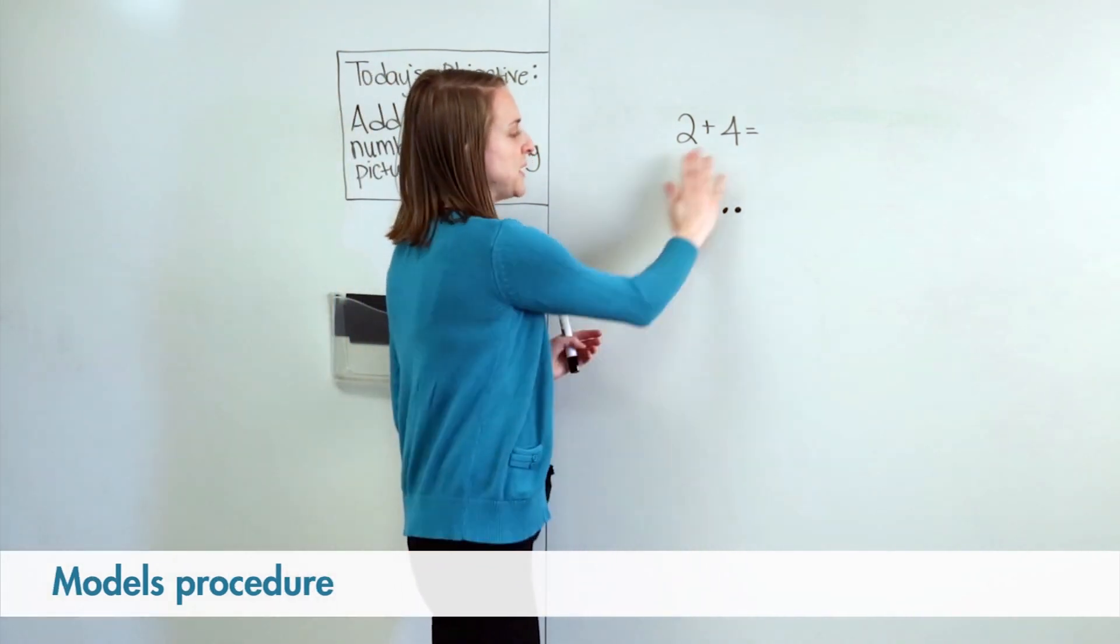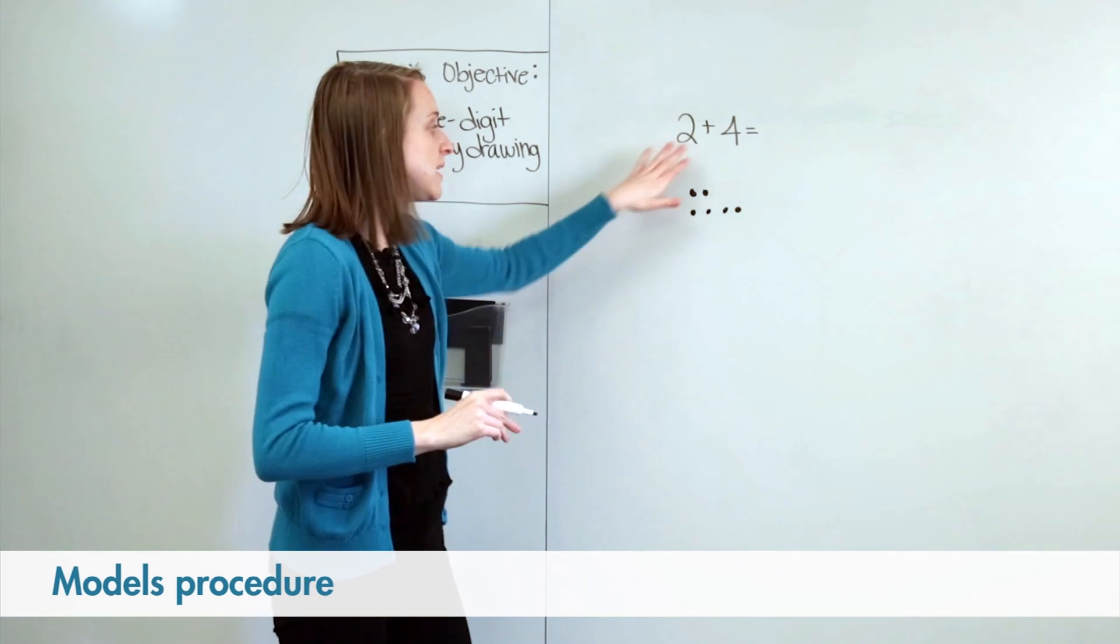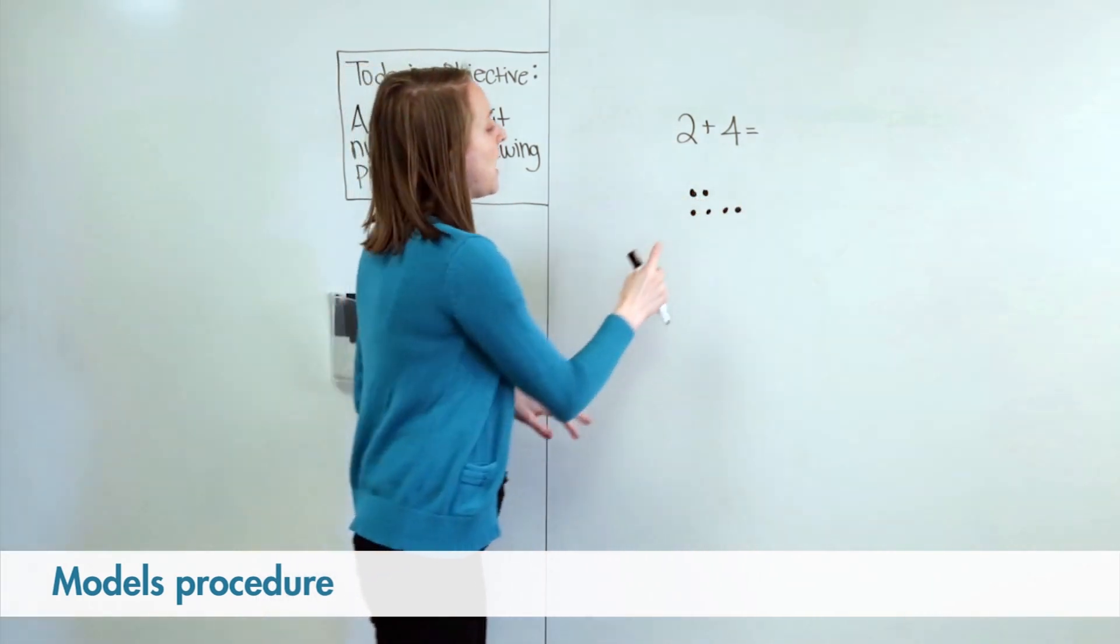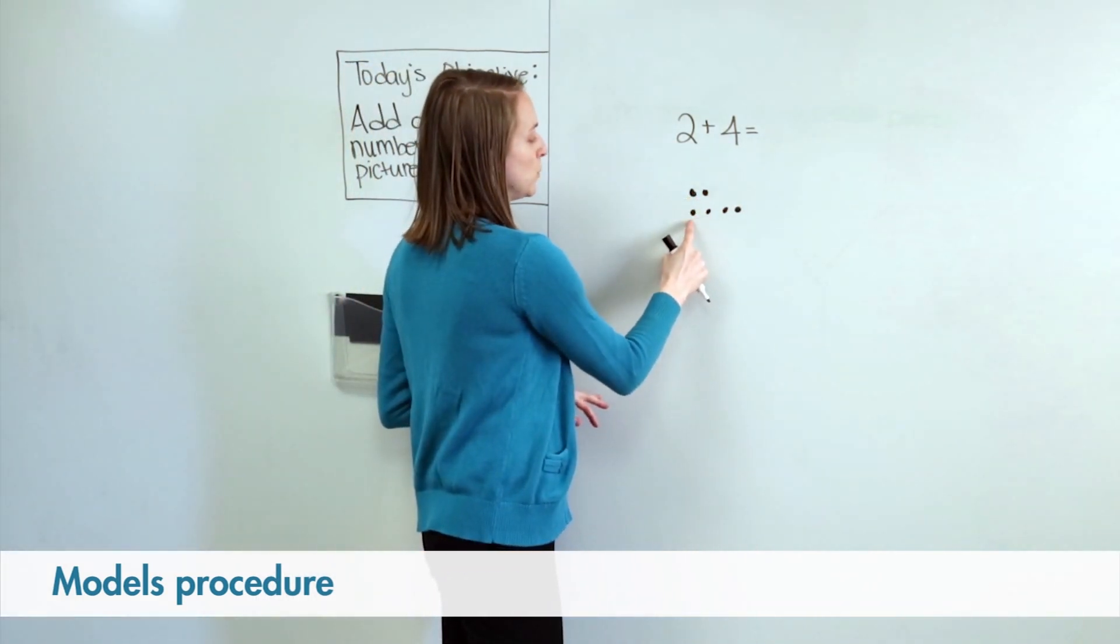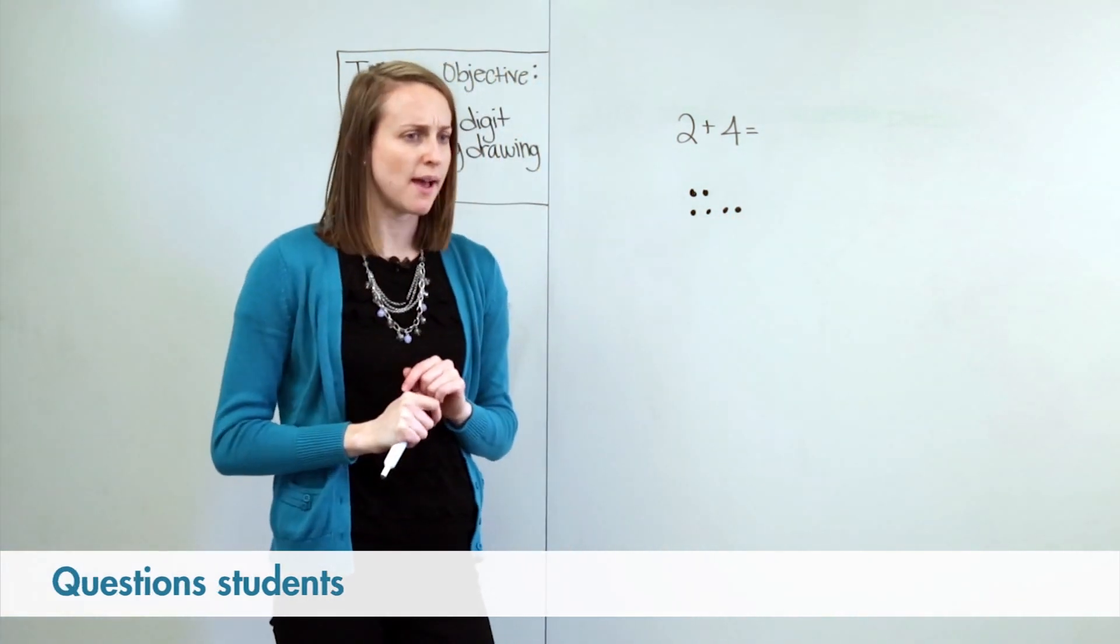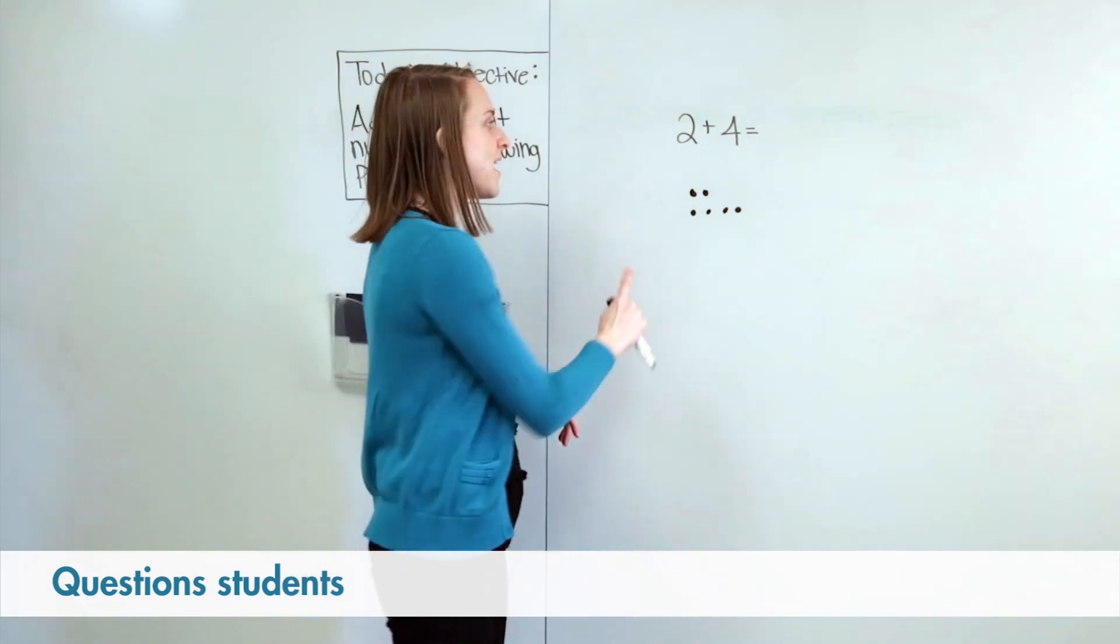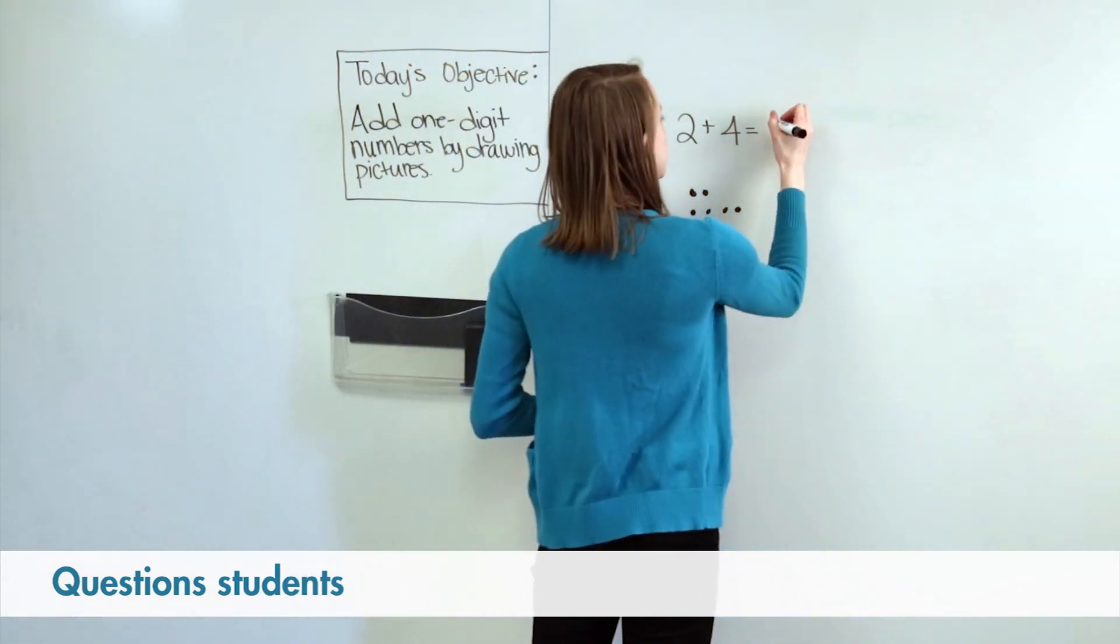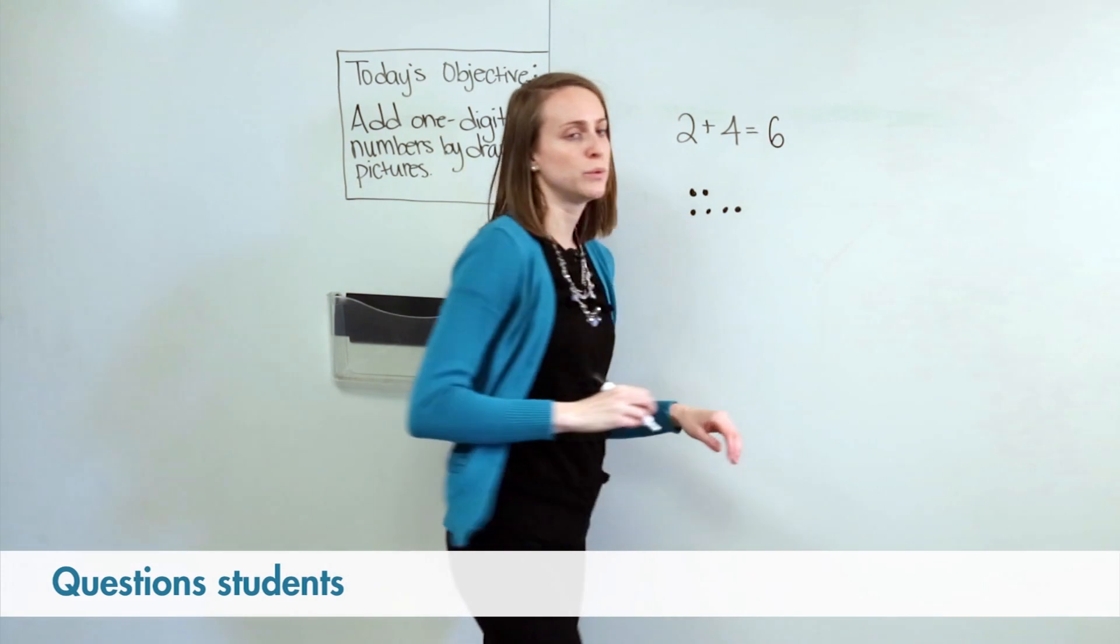My last step is to count all the dots to see how many dots I have all together. I have one, two, three, four, five, six dots. Carlos, how many dots do I have? Six. That's right, I have six dots. So I know that two plus four equals six.